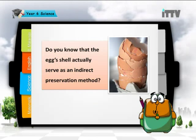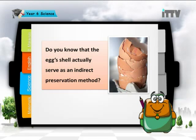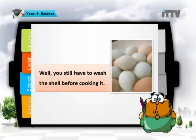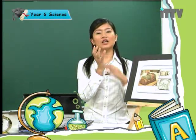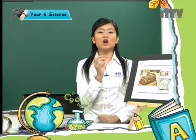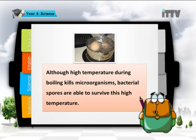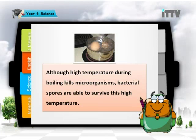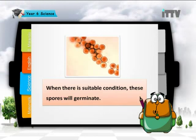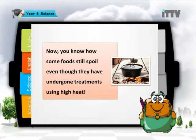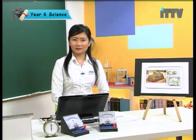Trivia: Did you know that an eggshell serves as an indirect preservation method? It prevents bacteria from entering the egg. However, you still need to wash the shell before cooking, because the shell may be contaminated with dirty substances from the chicken. Also, although high temperature during boiling kills microorganisms, bacterial spores are able to survive this high temperature. When conditions become suitable, these spores will germinate — this is why some food still spoils even after high-heat treatment.